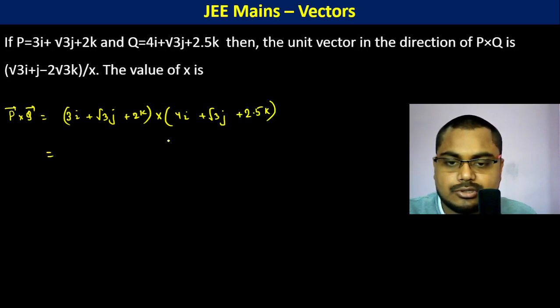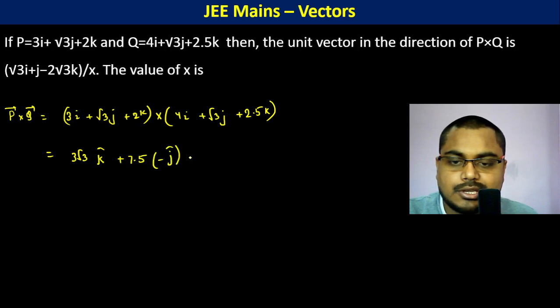i cross i is 0, 3 root 3 i cross j is k, plus 7.5 i cross k is minus j. j cross i is minus k, plus 4 root 3 minus k.